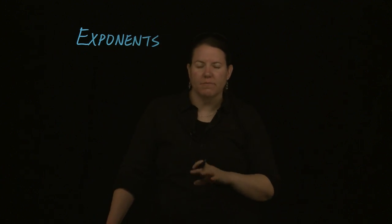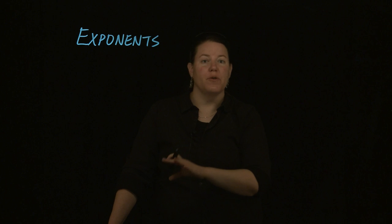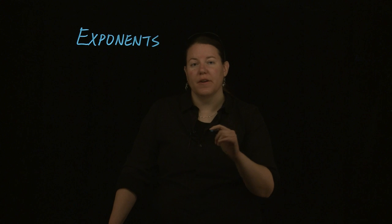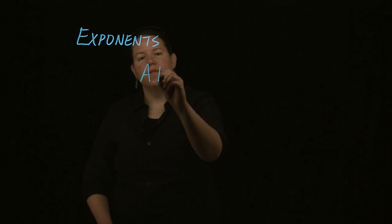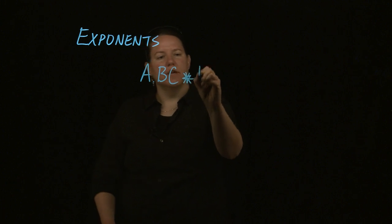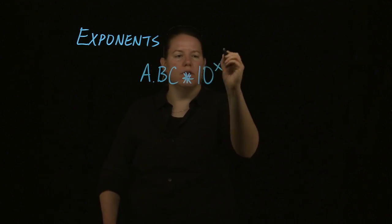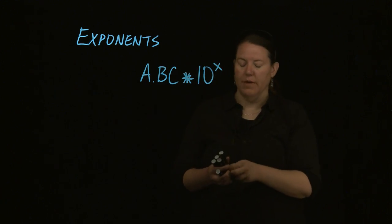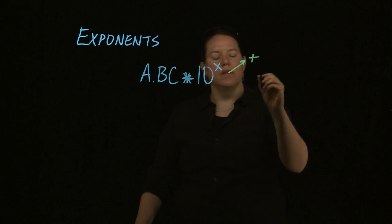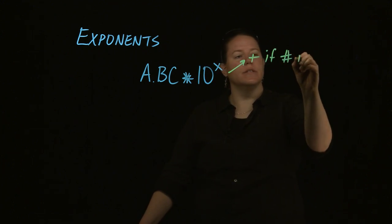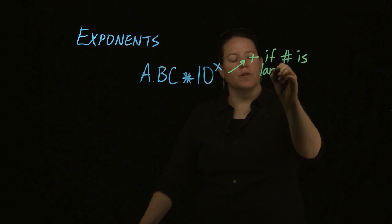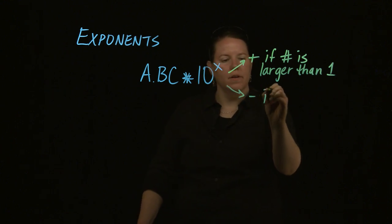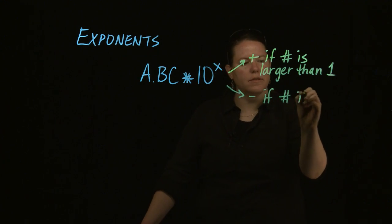In previous chemistry lectures, we talk about scientific notation. Scientific notation has this general look of some number of significant figures times ten to some exponent. That exponent is positive if the number is larger than one, and it's negative if the number is smaller than one.